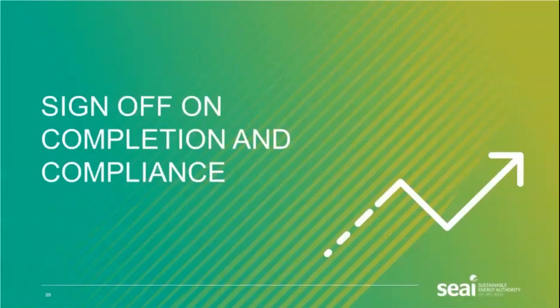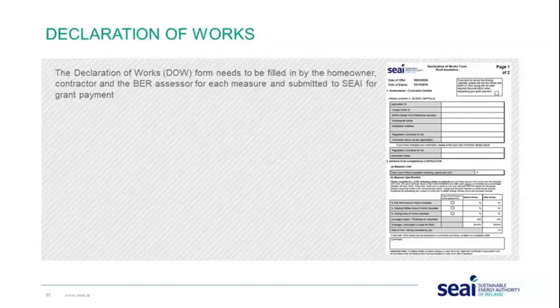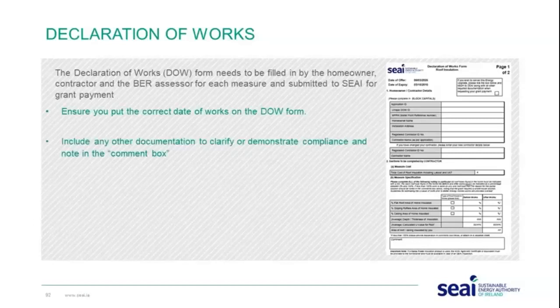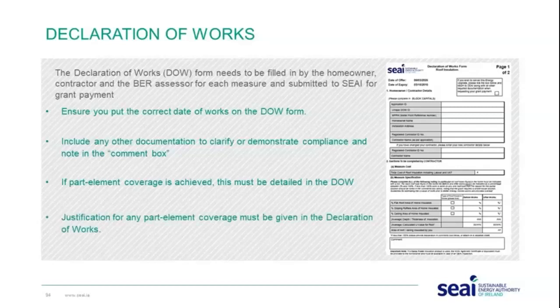For sign-off on completion and compliance, the declaration of works form needs to be filled out by the homeowner, contractor, and BER assessor for each measure, and submitted to SEAI for grant payment. Ensure the correct date is on the declaration. Include any other documentation to clarify or demonstrate compliance. Note in the comment box if there is any partial element coverage — this must be detailed in the declaration of works with justification.